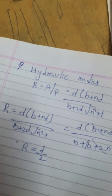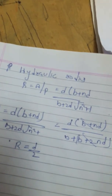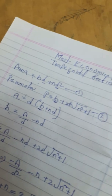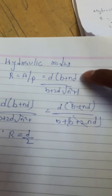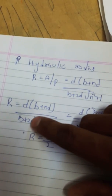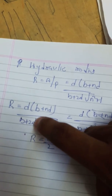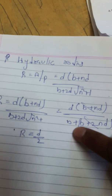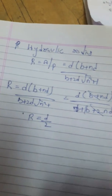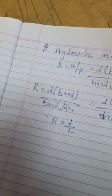Now we calculate the hydraulic radius for the most economical trapezoidal section. The hydraulic radius R equals area divided by perimeter. Substituting the values of A and P and canceling the common d terms, we get the final result: R equals d divided by 2.